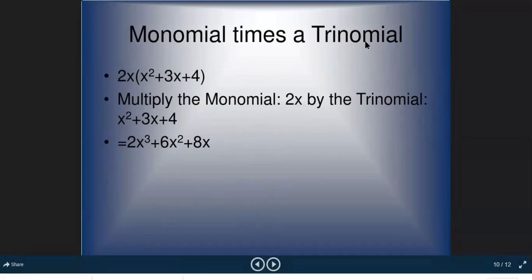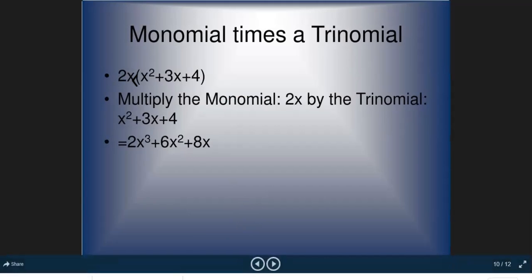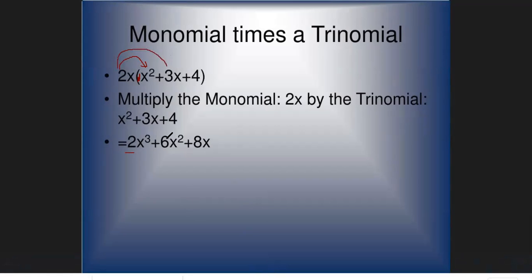For monomial times trinomial: a monomial has one term; a trinomial has three terms. Distribute the monomial over the trinomial. Example: 2x times x² gives x³; 2x times 3x gives 6x²; 2x times 4 gives 8x. This is how you distribute a monomial over a trinomial.